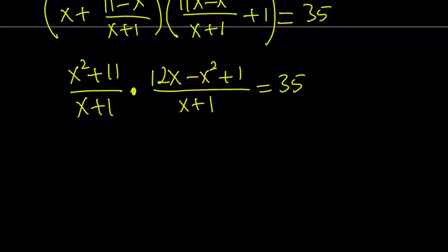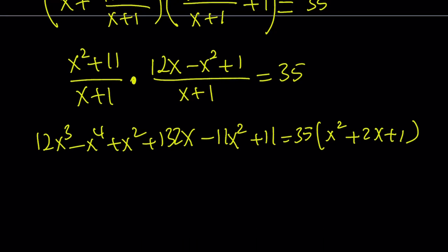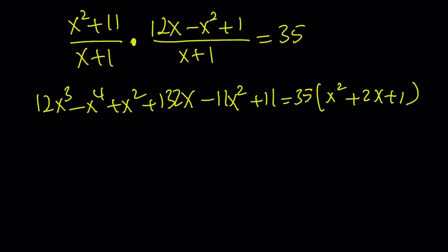Now, after multiplying everything together and cross-multiplying, we get the following: 12x cubed minus x to the fourth power plus x squared plus 132x minus 11x squared plus 11 equals 35 times x squared plus 2x plus 1, which is x plus 1 quantity squared. And if you distribute everything and rearrange the terms, combine like terms,